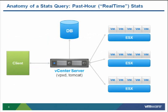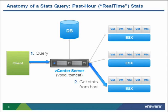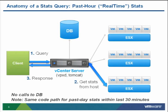When you perform a statistics query as a client, you go to the vCenter server. For a real-time stat, vCenter redirects that query directly to the ESX host, which retrieves the statistics and sends them back. There are no calls to the database during this operation. If a past-day statistic was generated within the last 30 minutes, those queries also go from vCenter directly to the host via the data feed service, preventing unnecessary database queries.